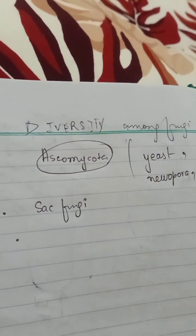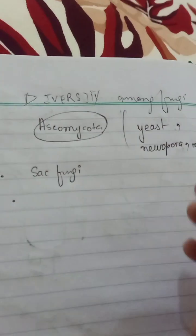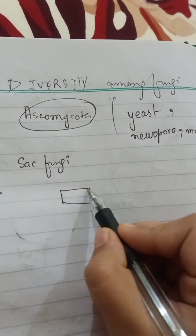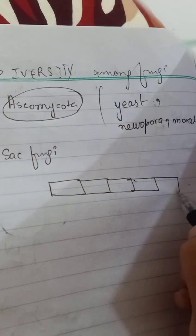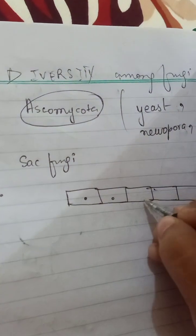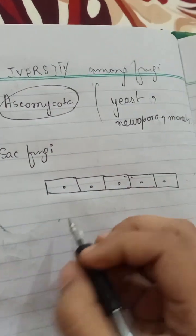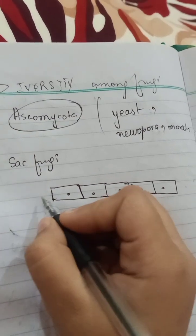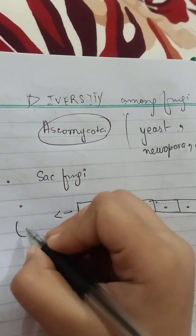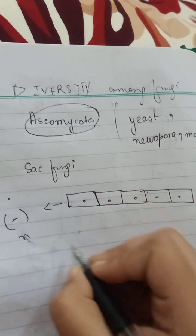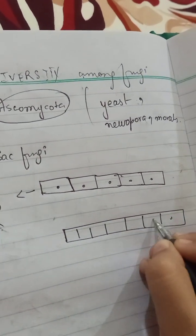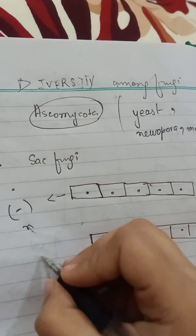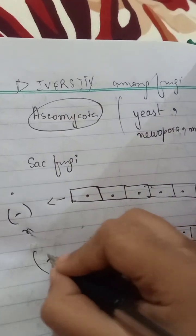If we talk about the life cycle, we will discuss all the points. The mycelium is the body of fungi. This mycelium is monokaryotic, which means having one nucleus, and it is septate, meaning it has cross walls. There is the mycelium of the negative (male) type and the mycelium of the female type.